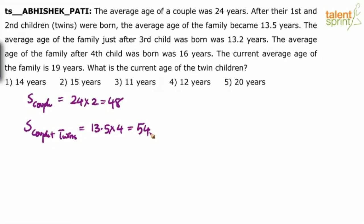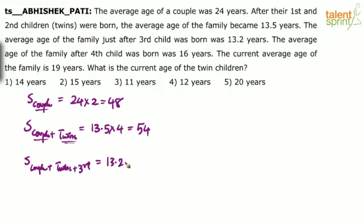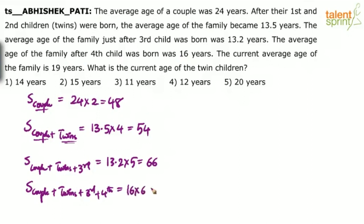The average age of the family just after the third child was born was 13.2 years. That means the sum of the ages of couple plus twins plus the third child is 13.2 into 5, which is 66. Then the average age of the family after the fourth child was born was 16 years. So, sum of the couple plus the twins plus the third child and the fourth child is 16 into 6, which is equal to 96.